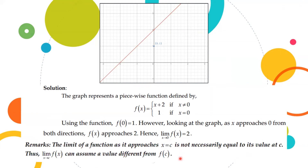Remember that the limit of a function as x approaches c is not necessarily equal to its value at c. Thus, the limit of f(x) as x approaches c can assume a value different from f(c). Meaning, we cannot simply say that the limit of a function as x approaches c is equal to f(c).